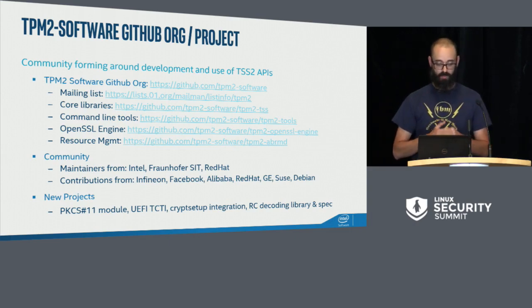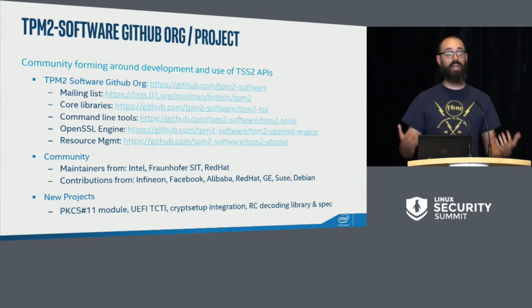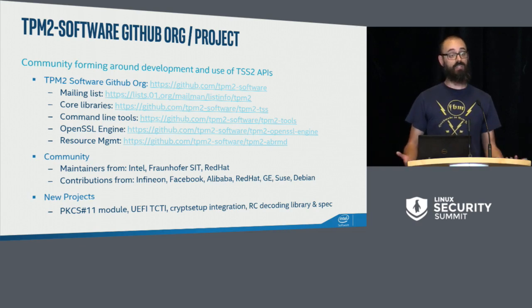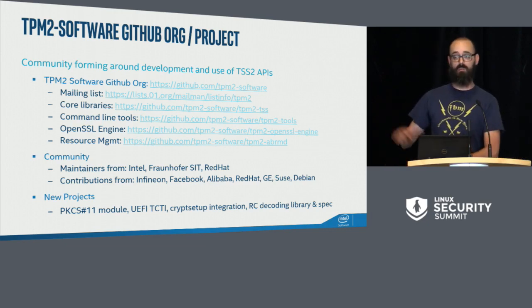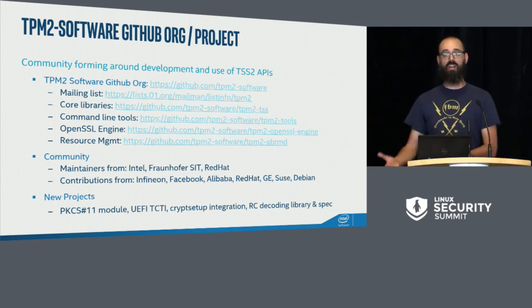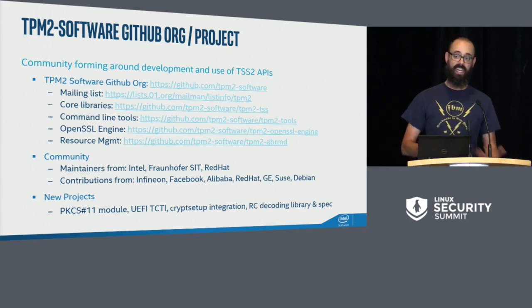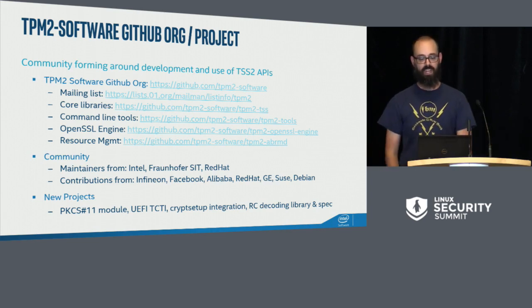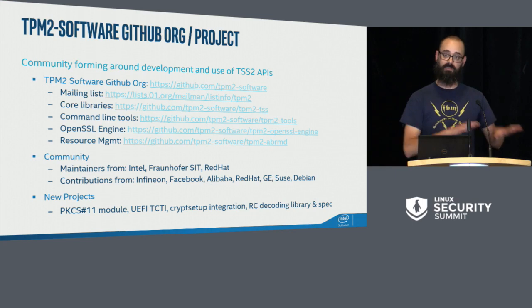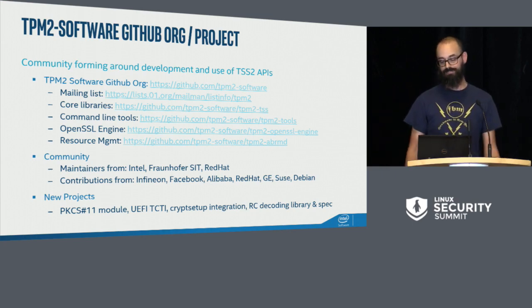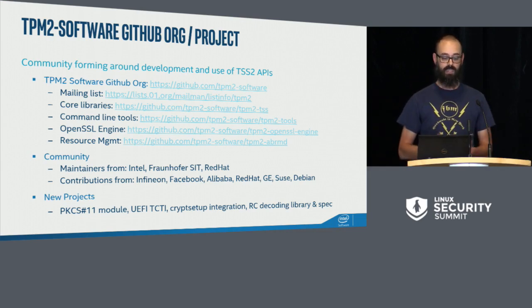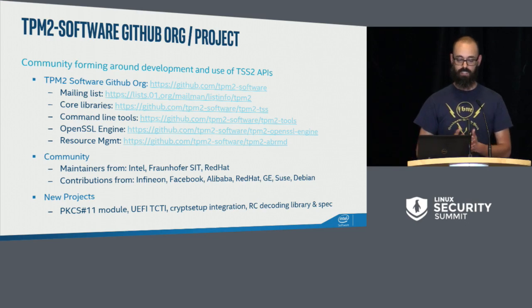Everything is now up on GitHub. We have a separate organization for the project rather than Intel's real estate, because we've gotten significant external contributions. The biggest was the ESYS layer — our friends at Fraunhofer had a completely separate stack that wasn't open source. When they saw our project had come along, they said, 'you're missing ESYS, that's the only thing you're missing.' We worked out an agreement, they took their ESYS, lopped off the lower parts, open sourced the higher-level API, and rebased it on top of our lower stack. That's really what made this as successful as it is.